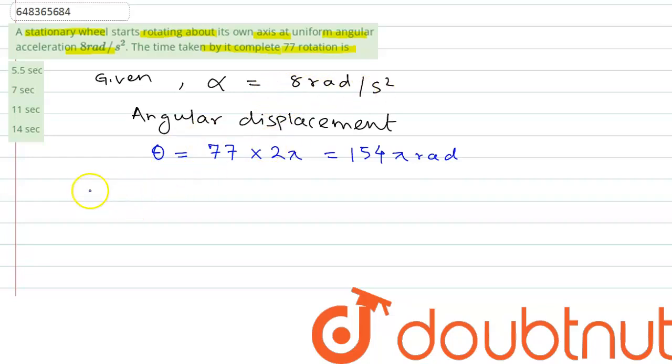Now let us apply these two values to the equation of kinematics or equation of motion. Angular displacement will be omega 0 t plus half alpha t square. This equation is similar to s equals ut plus half at square. That was in linear motion. This is in circular motion.